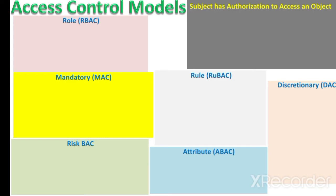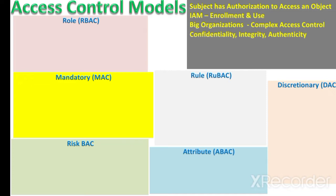In access control we decide that a subject has an authorization to access an object. The identity and access management system decides this at the time of enrollment of the subject and when the subject tries to use an object. In larger organizations, access control requirements are very complex due to the larger number of subjects and objects, therefore we use access control models. These models address the three main concerns of security: confidentiality, integrity, and authenticity.